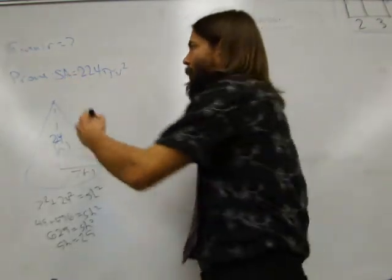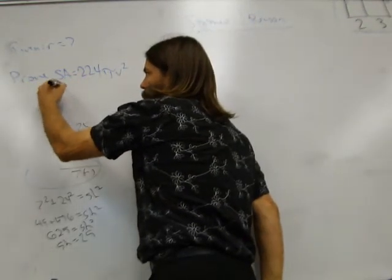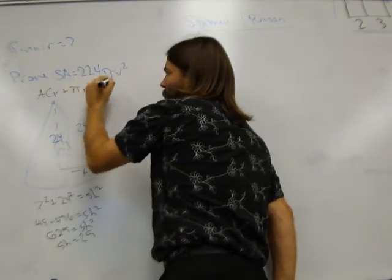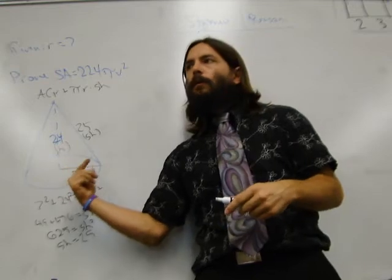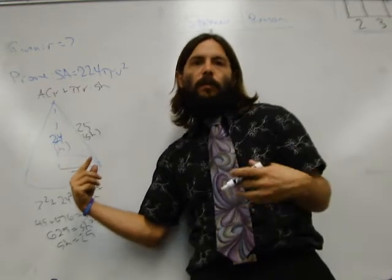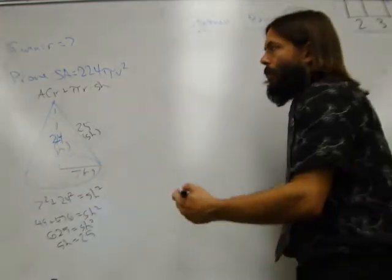So that's going to be the area of the circle plus pi times the radius times the slant height. All right. So the circle here has a radius of 7. So to find the area, you do pi times the radius squared. What is 7 squared? 49.